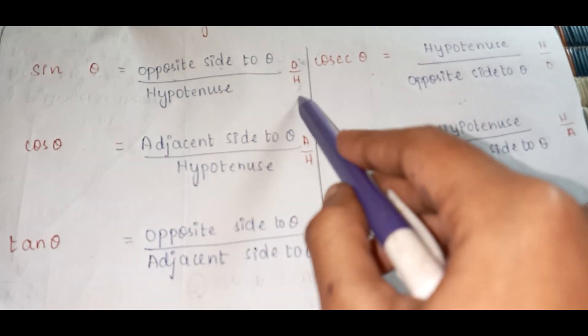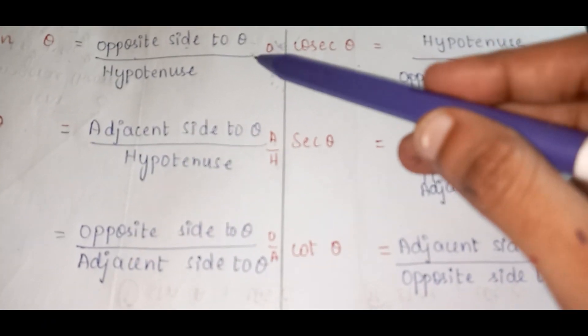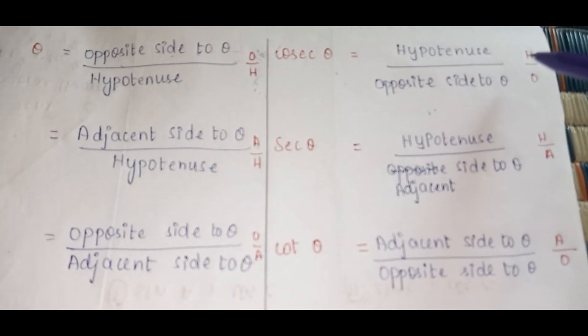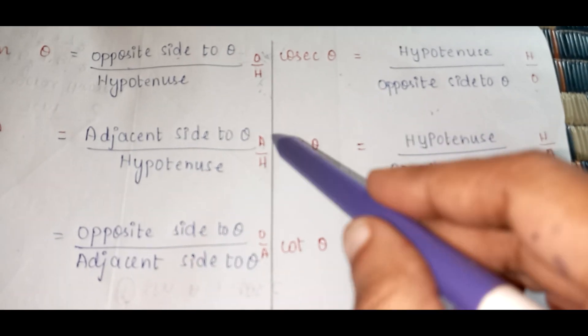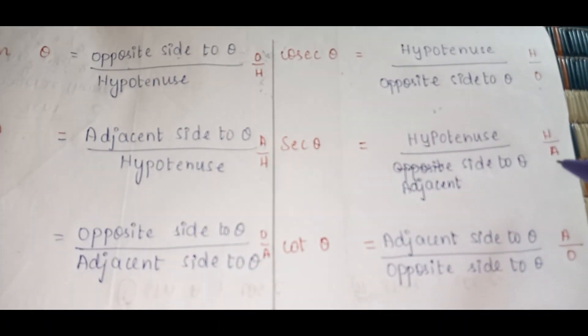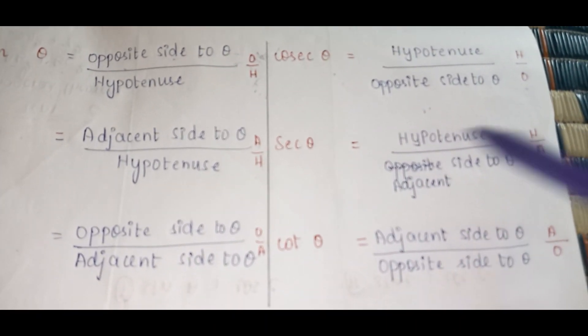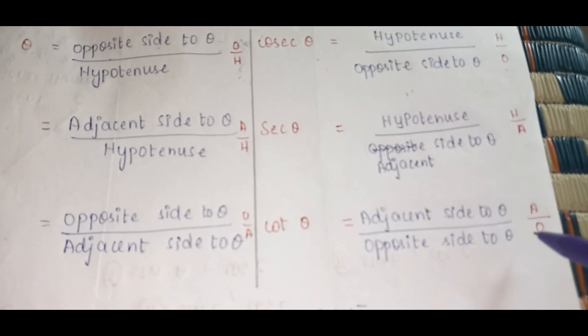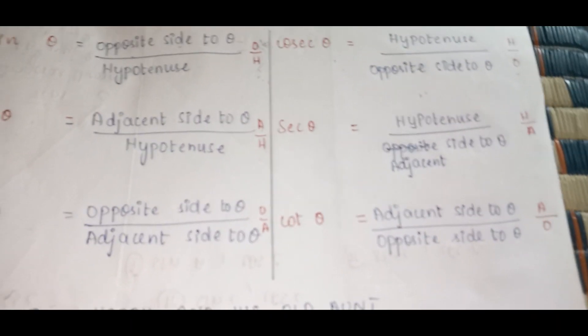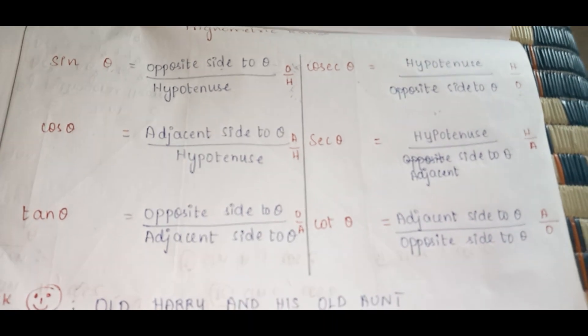After writing 'Old Harry and His Old Aunt' you get sin, cos, and tan ratios. Then you make the reciprocals: O by H becomes H by O for cosec, A by H becomes H by A for sec, and O by A becomes A by O for cot. This is a very simple trick to remember all six trigonometric ratios.